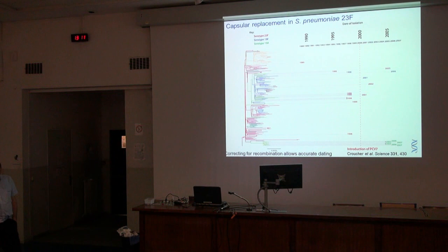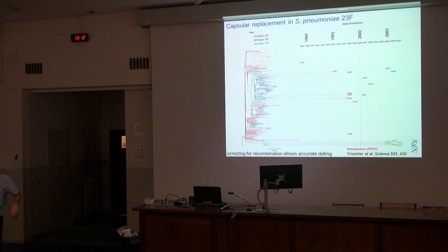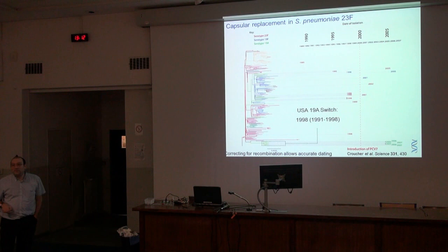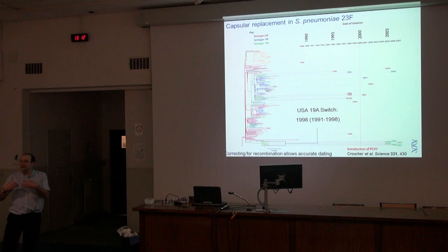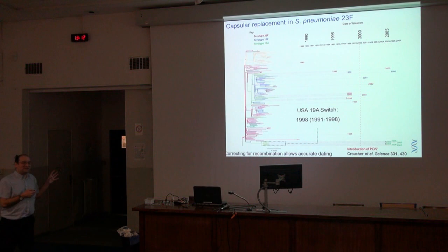Looking at all isolates in our tree from North America, we can see isolates of 23F and 19F — both covered by the vaccine — and also switches to 19A, which is not covered. The vaccine types were isolated mainly before the vaccine's introduction in 2000, and the non-vaccine types were isolated after. It looks obvious that after introducing the vaccine, the bacterium switches its capsule. But we can test this: because we've built a robust dated tree, we can accurately date each branch. We find the capsule switch date to be before the introduction of the vaccine. The switch didn't occur in response to the vaccine — it had already occurred. The vaccine wiped out the majority of the population and opened up the niche for a pre-existing vaccine-escape variant to invade.